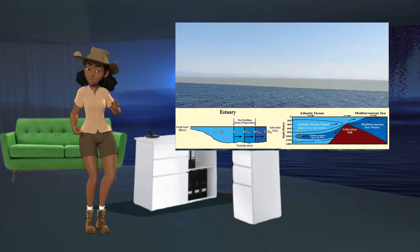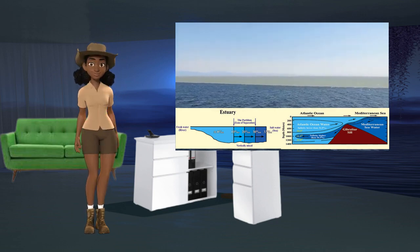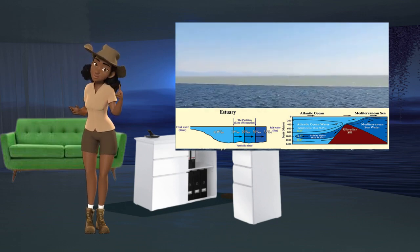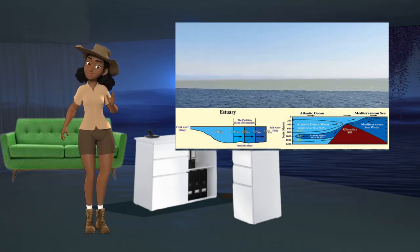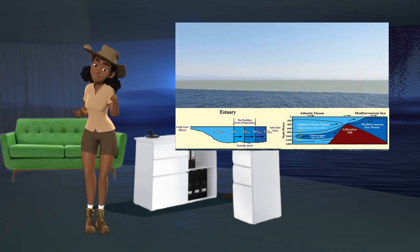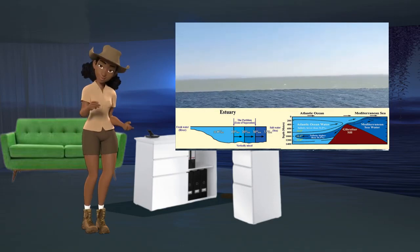what distinguishes fresh water from salt water in estuaries is a pycnocline zone with a marked density discontinuity separating the two layers. This partition has a different salinity from the fresh water and from the salt water.